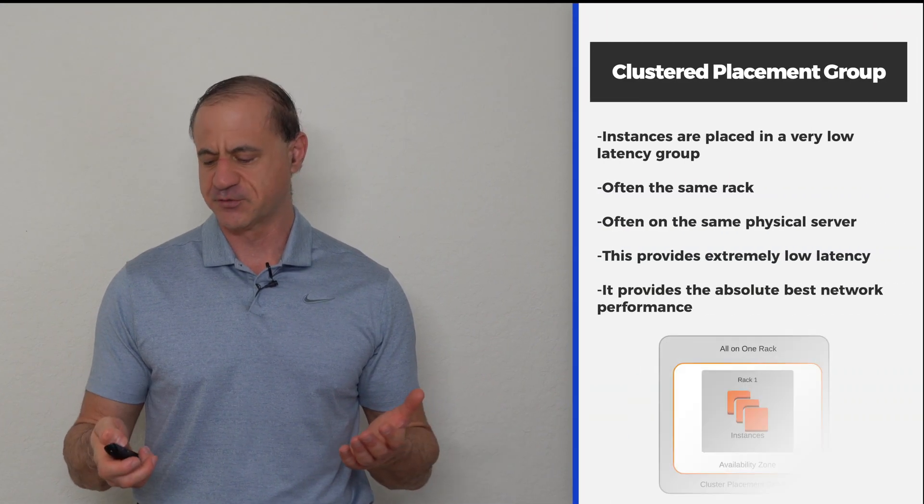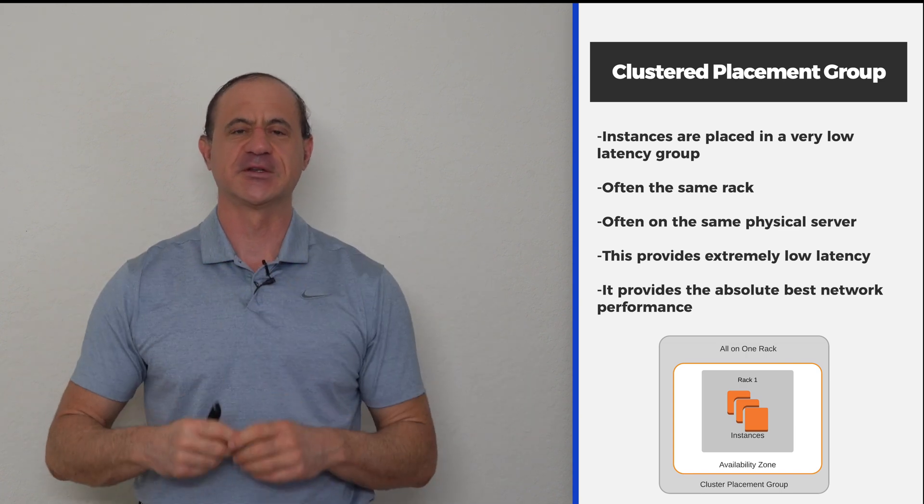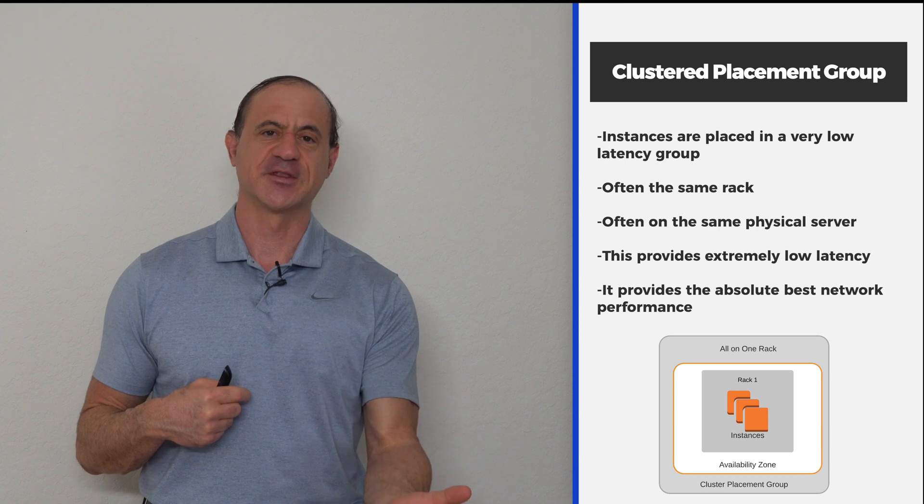But why would you do this? In my past, I designed a lot of high performance computing systems for financial applications. When you're designing a trading system, if you're purchasing 10,000 shares of a stock and you have information based on current news for which everybody's going to be trying to purchase the stock, if you could purchase that stock one millisecond faster than the other people, you might get it cheaper. Same thing if you were trying to sell a stock — if there was bad news and you could sell one millisecond or one nanosecond faster than your competitors, even that would be a competitive advantage. So when we're talking about this kind of clustered placement group, we're talking about how to take nanoseconds or milliseconds out of the equation. That's what clustered placement groups are.